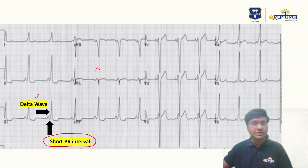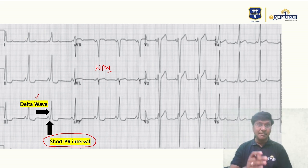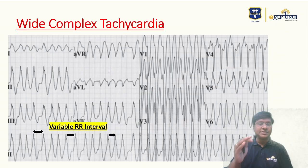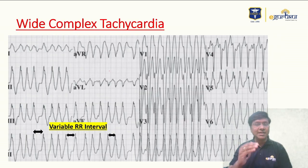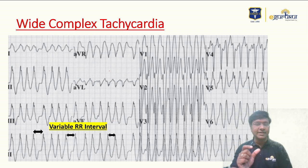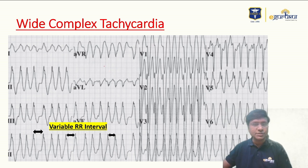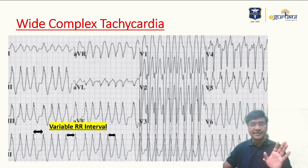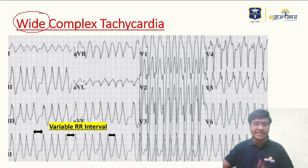These two abnormalities — the short PR interval and delta wave — are suggestive of WPW syndrome. So it is not very difficult to make the diagnosis from this ECG. However, this patient has decompensated, and we now look at the second ECG. On the second ECG, there is tachycardia with a wide complex tachycardia pattern.